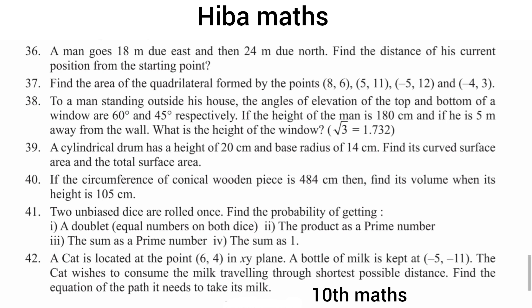If the circumference of a conical wooden piece is 484, find its volume and height. From the circumference, we find the radius, and from the radius we find the volume.